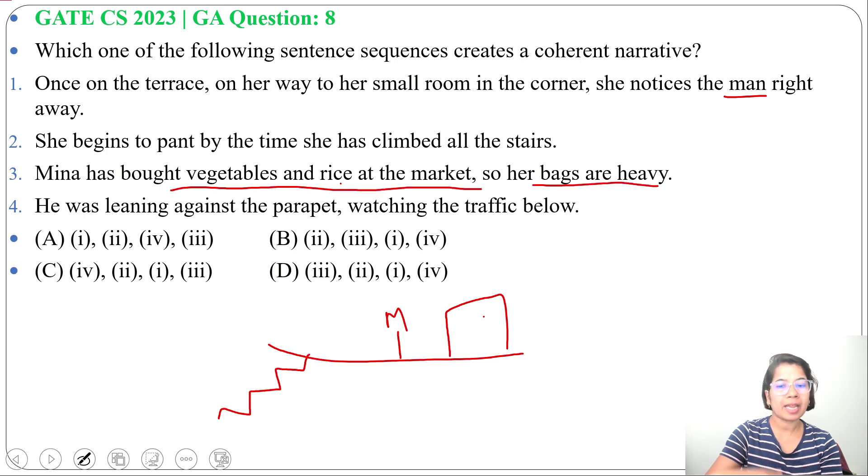Then she is climbing the terrace, so that's why she begins to pant. She is tired too much as she is climbing with heavy weight. So first will be three, then two.